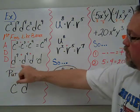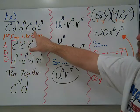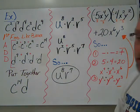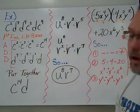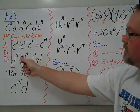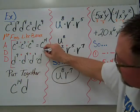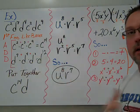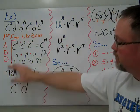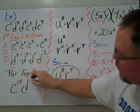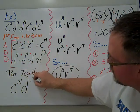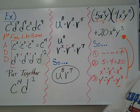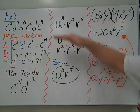For our d's, we have powers of 7, 4, and this d with no written power — which is always assumed to be 1. So 7 + 4 + 1 gives a power of 12. Putting it all together alphabetically: c to the 14th, d to the 12th. That takes care of combining all those separated terms into one answer.